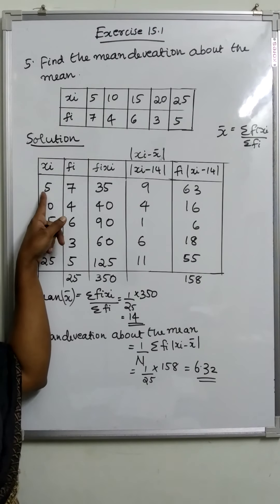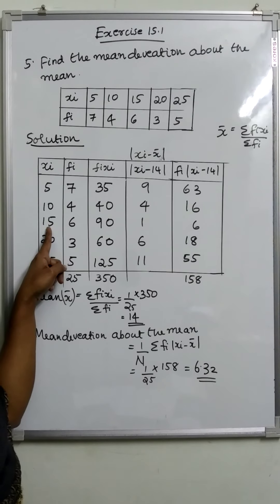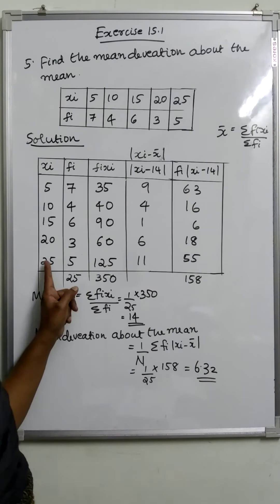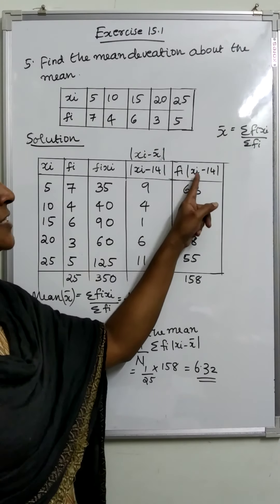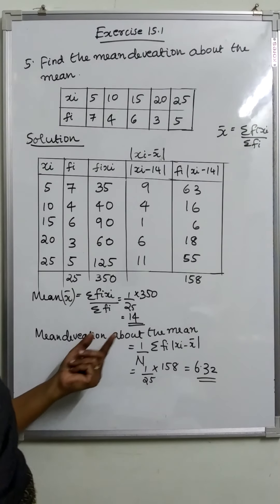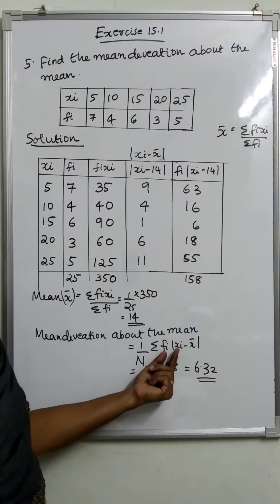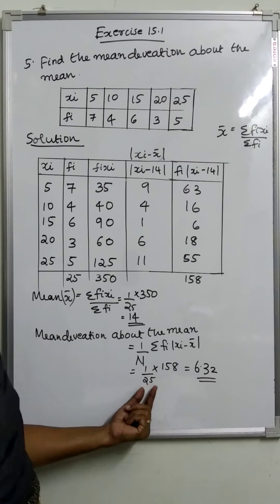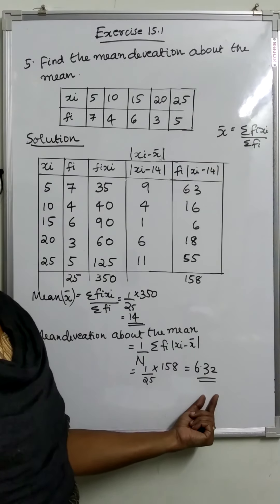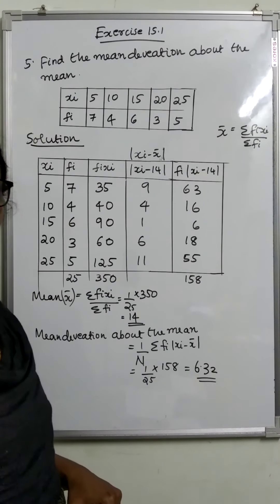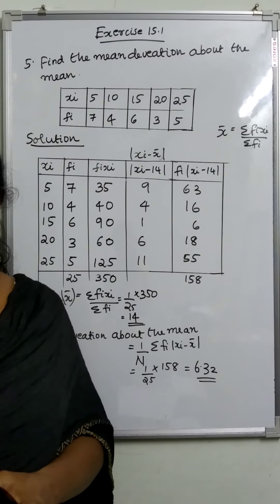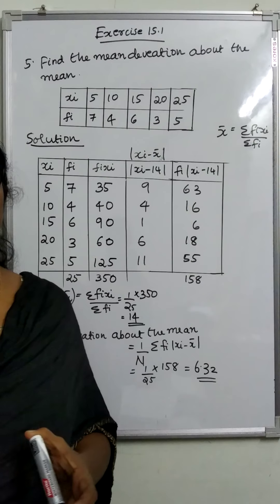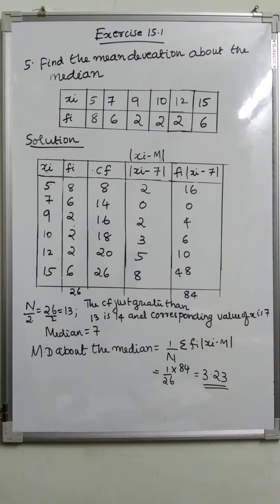The mean deviation about the mean is equal to 1 by n, sigma fi into modulus xi minus x-bar. That is 1 by 25 into 158, that is 6.32.